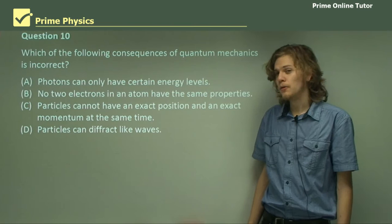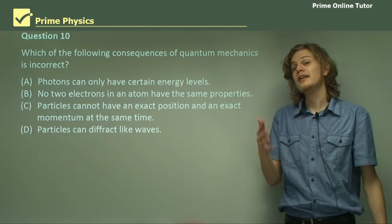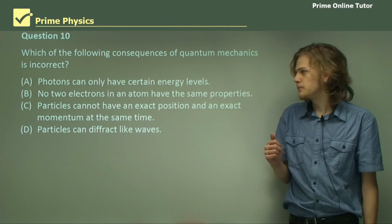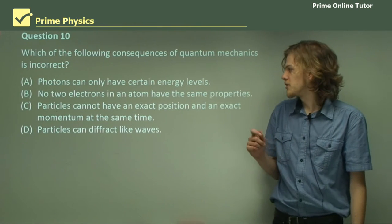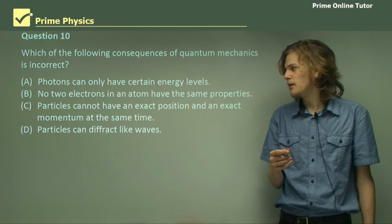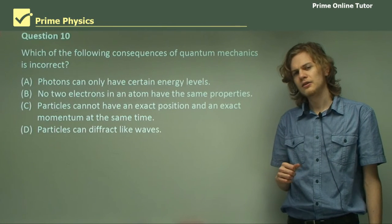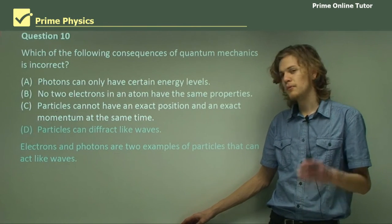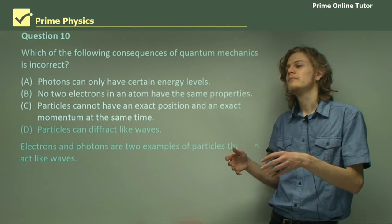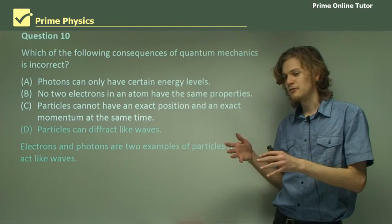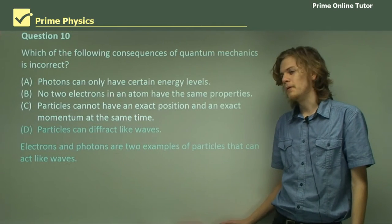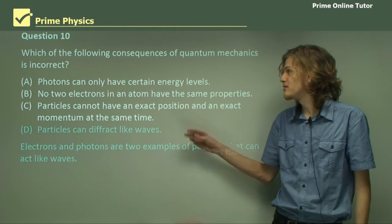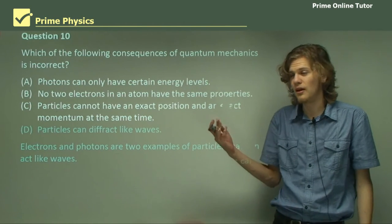Question 10: Which of the following consequences of quantum mechanics is incorrect? Options: photons can only have certain energy levels; no two electrons in an atom have the same properties; particles cannot have an exact position and an exact momentum at the same time; or particles can diffract like waves. Starting at the bottom — D, particles can diffract like waves: electrons and photons are both examples of particles that have been proved to diffract, so they're both waves as well. Particles can diffract like waves is a correct consequence of quantum mechanics, and so it's not the answer we're looking for.